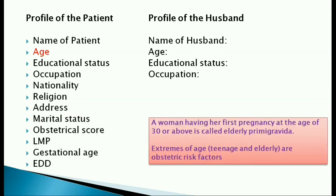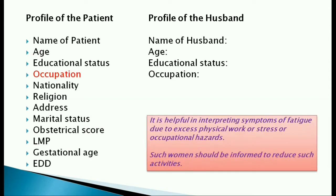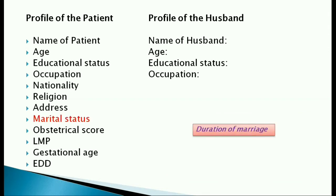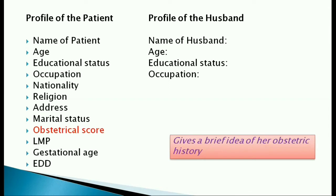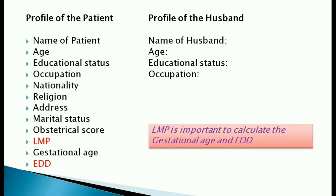Why is age important? Extremes of age — both teenage pregnancy and an elderly primigravida — are obstetric risk factors. We need to know the occupation of the patient to identify any excessive physical activity, stress, or occupational hazards and advise them to reduce such activities. In marital history, we mention how long she has been married. Obstetric score gives a brief idea about the obstetric history of the patient. The exact date of the first day of the last menstrual period is important to calculate the gestational age and the expected date of delivery.